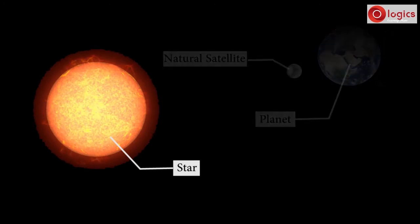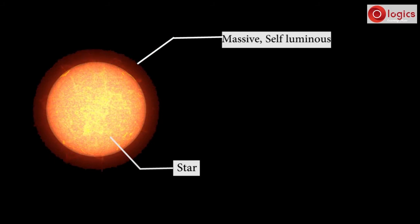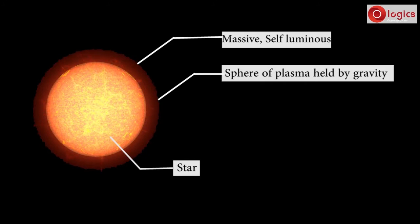Let's see what is a star, and why sun is a star? A star is a massive, self-luminous that brights on its own. In a star, sphere of plasma is held together by its own gravity.